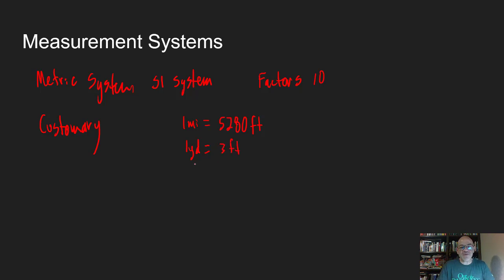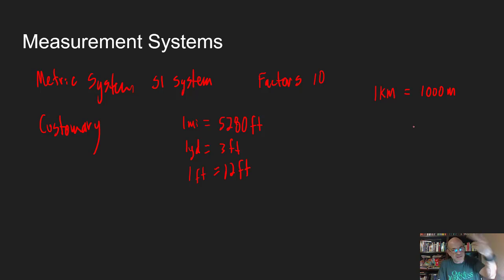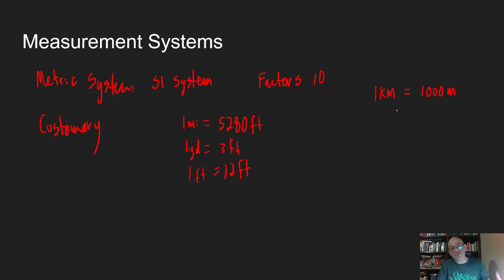A yard is 3 feet, and 1 foot is 12 inches — there's no rhyme or reason to what's related to what. But in the metric system, for long distances we use a kilometer, which is equivalent to 1,000 meters. A thousand is 3 factors of 10, or 3 orders of magnitude. An order of magnitude is a level of 10 — two orders of magnitude is 10 times 10, which is 100. The bigger and smaller metric units go by factors of 10, which is very convenient.